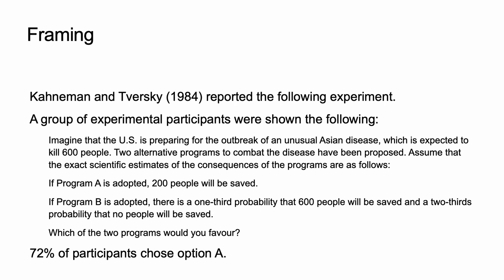A group of experimental participants were shown the following. Imagine that the U.S. is preparing for the outbreak of an unusual Asian disease, which is expected to kill 600 people. Two alternative programs to combat the disease have been proposed. Assume that the exact scientific estimates of the consequences of the programs are as follows. If program A is adopted, 200 people will be saved. If program B is adopted, there is a one-third probability that 600 people will be saved and a two-thirds probability that no people will be saved. Which of the two programs would you favor?